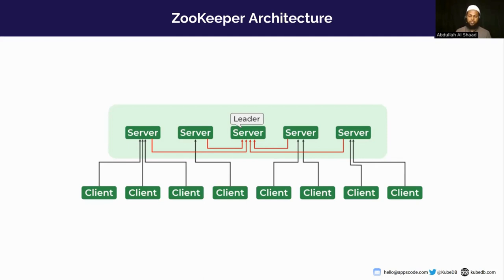In ZooKeeper, we have nodes. You can create different nodes — it works like a Linux file system. You have the root directory, and within it you can create nodes in subdirectories. Each directory can contain some data, and using this structure you can coordinate your services and implement leader election.